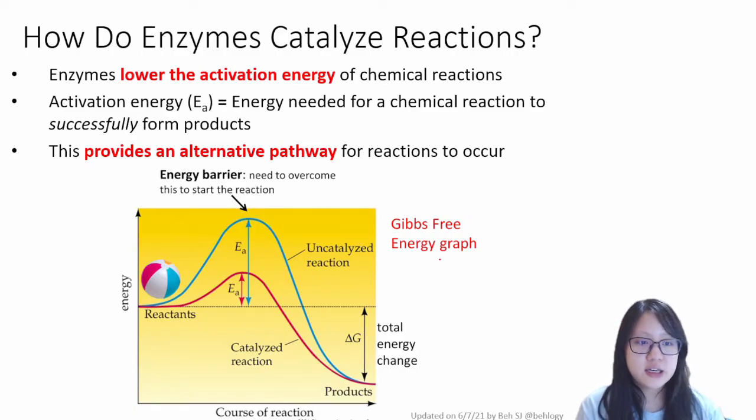And you can see it here. You can see that the y-axis is energy and the x-axis is the course of reaction, sometimes also labeled time. So energy against time. We see the reactants on one side and the products on the right side of the graph. And there's this little curve here that shows us the energy barrier. You need to overcome this energy barrier in order to start the reaction. This amount of energy needed for it to successfully form products is called activation energy.